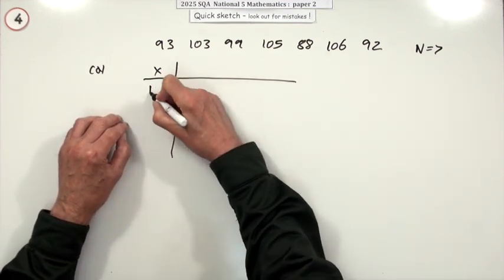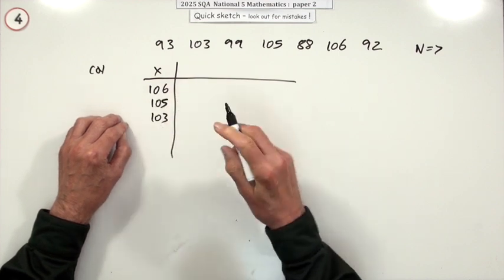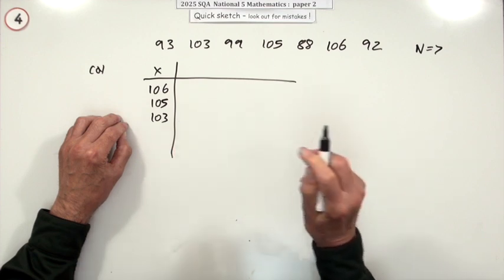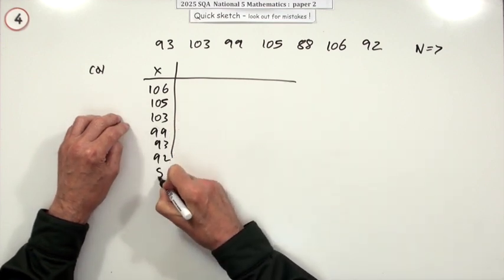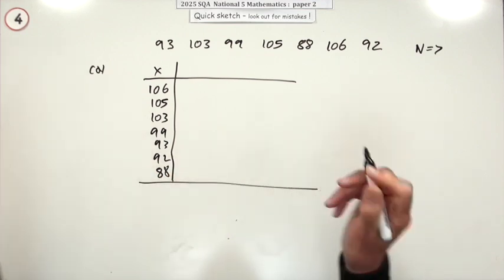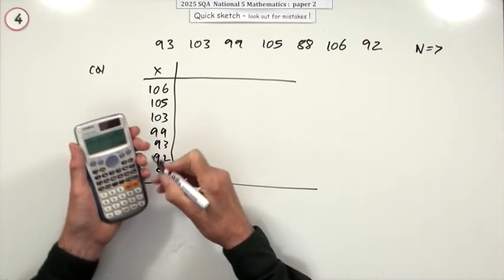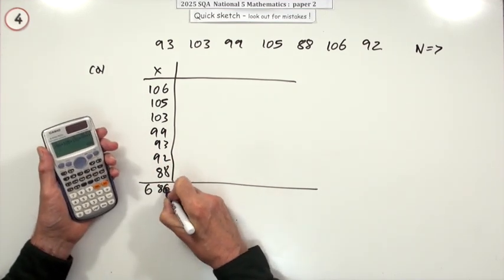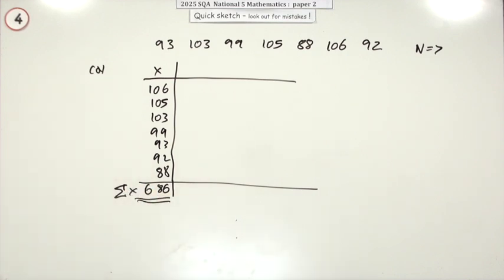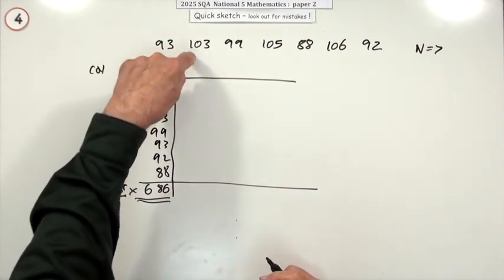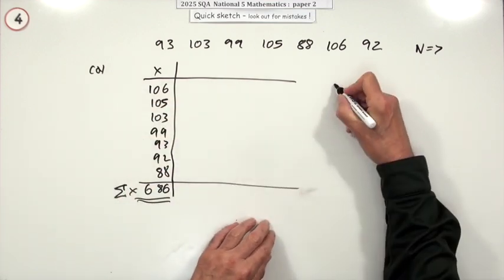But I've got 106, 105, 103, 99, 93, 92, and 88. Oops, not too tidy. But I'm just doing this very quickly anyway. So add that up and that comes to 686. So that's sigma x. Now you don't need to put them in order. I just put them in order just to make it look neater here. And you can sort of spot mistakes.